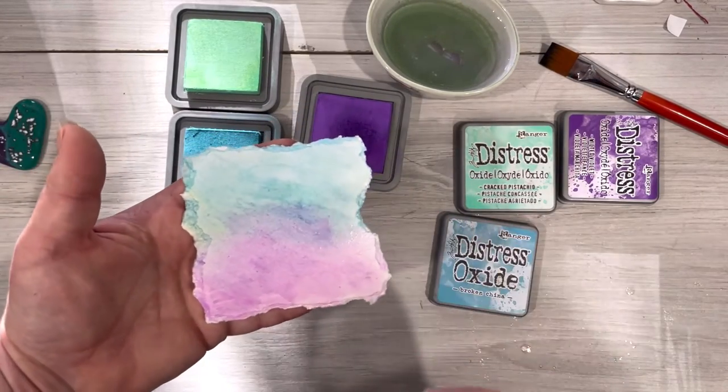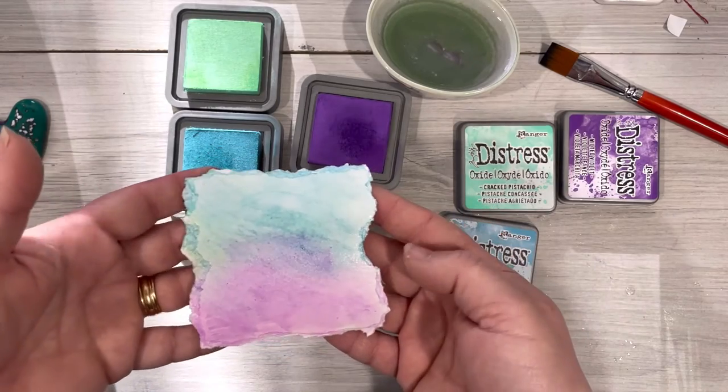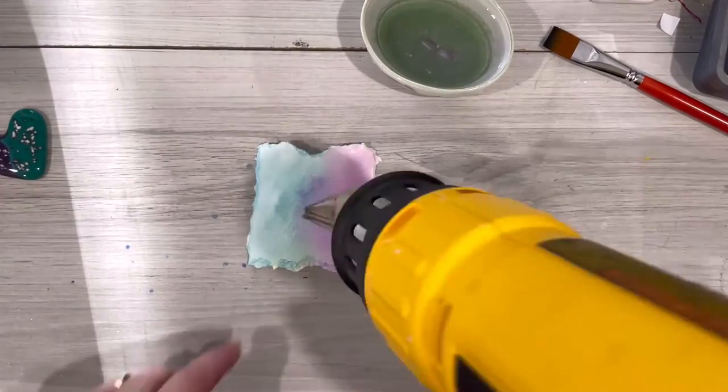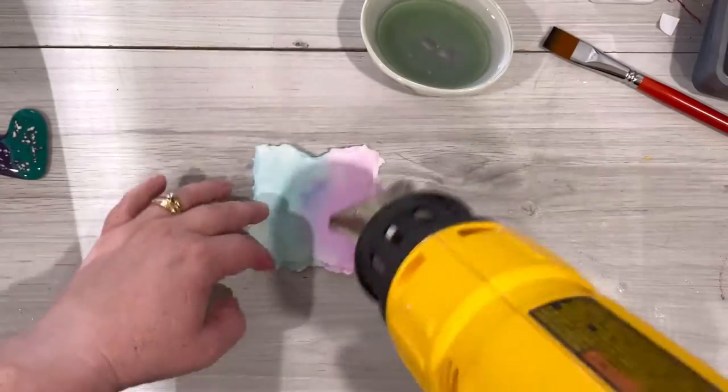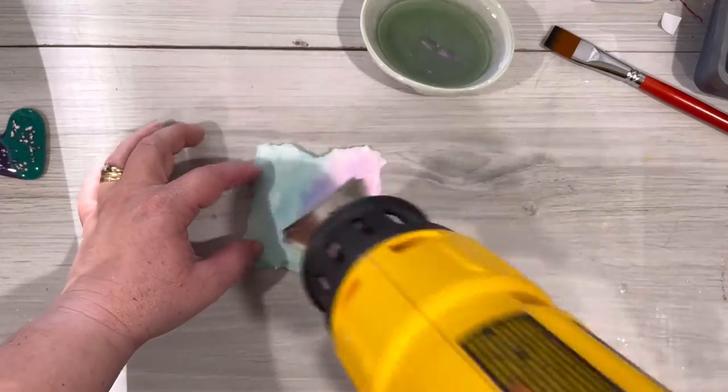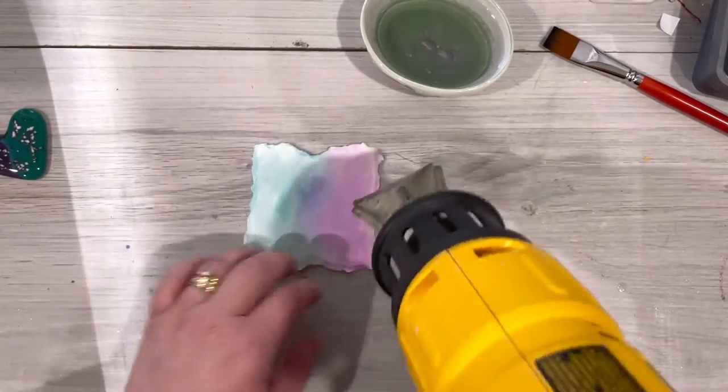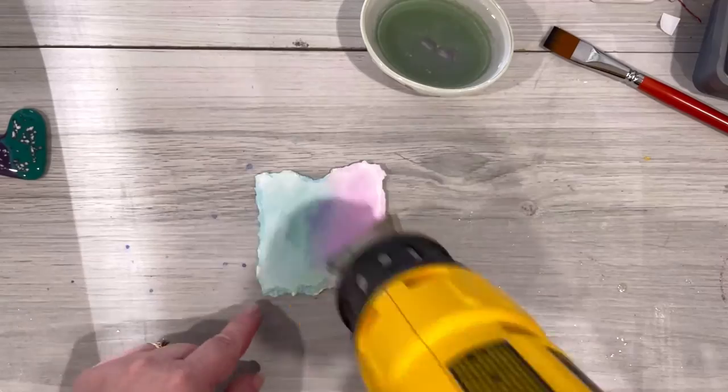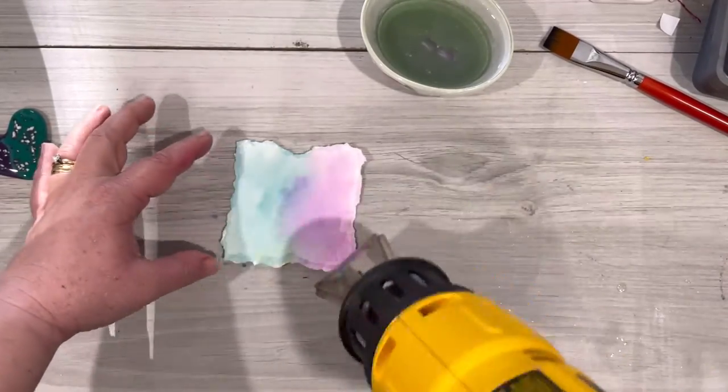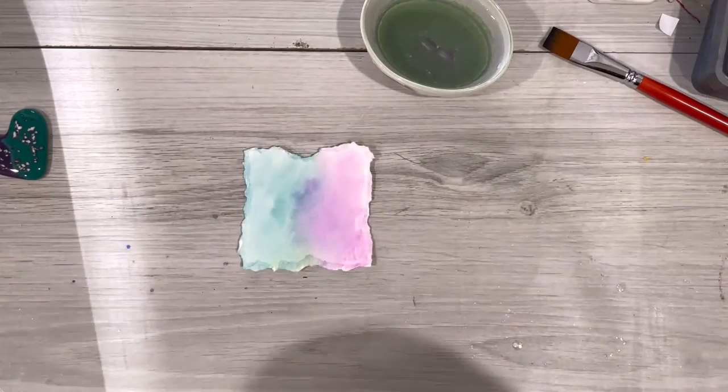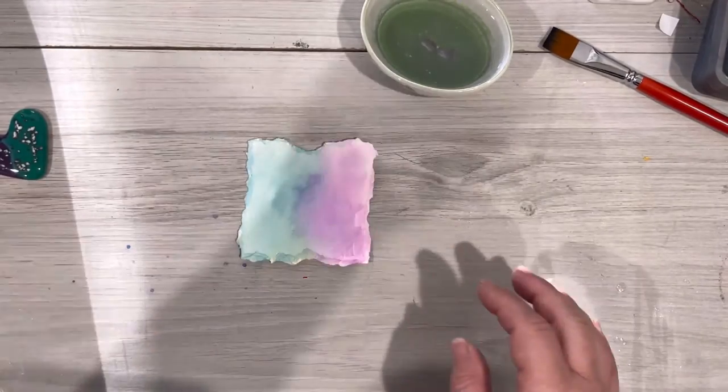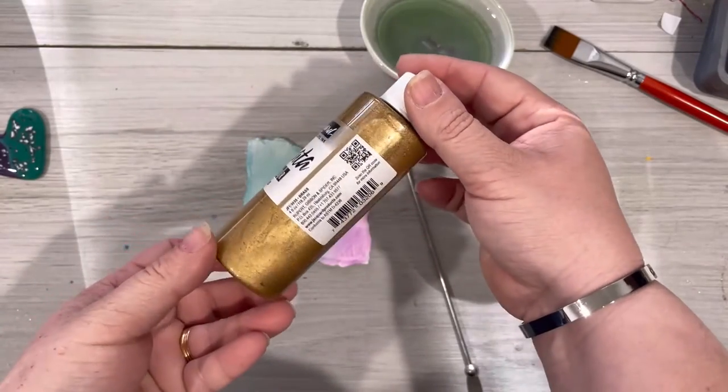Once you have the color looking the way that you'd like we are going to dry this with a heat gun. I'm using a DeWalt heat gun. I will have it listed and linked in the description box. I like this because it has several interchangeable tips and we're a DeWalt family so it's got to be DeWalt. The best part about heat setting this is it really helps to soften our colors and also creates a perfectly dry surface for the next step. If you wait for it to dry you may get the edges curling up so just keep that in mind.